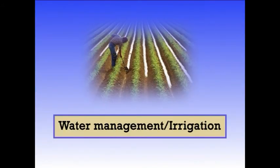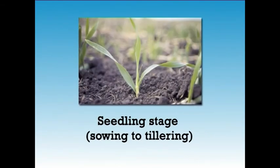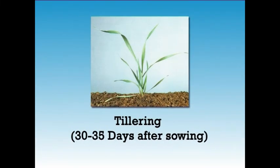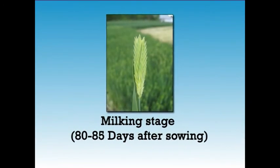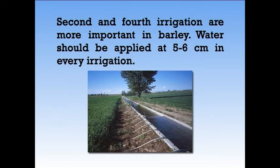With erratic, unpredictable, and unevenly distributed rainfall, irrigation is given to barley only at the most critical stages of the crop. Barley requires at least 4 irrigations as water is a limiting factor, particularly at the critical stages: seedling stage (sowing to tillering), tillering stage (30 to 35 days of sowing), flag-leaf stage (60 to 65 days of sowing), and milky stage (80 to 85 days of sowing). Second and fourth irrigations are more important. Water should be applied at 5 to 6 cm per irrigation. If only 2 irrigations are available, they should be given at tillering and flag-leaf stage.